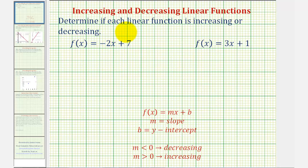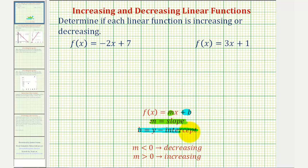We want to determine if each linear function is increasing or decreasing. Looking at the linear functions, notice how both are in the form of f of x equals mx plus b, where m is the slope of the linear function and b is the y-intercept.